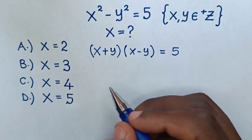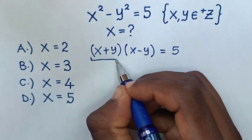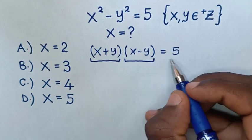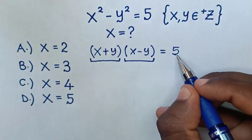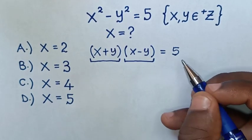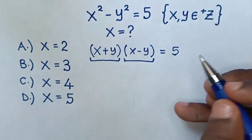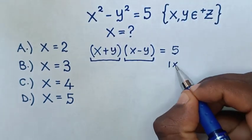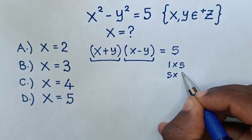Then, because this is a product of x plus y and x minus y to get 5, which is a prime number, it means 5 is a product of positive integers, which can either be 1 times 5 or 5 times 1.